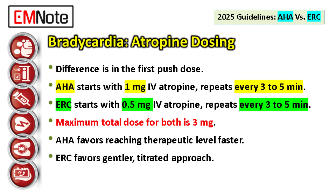The AHA total dose is capped at 3 milligrams. The ERC, though, they start lower — 0.5 milligrams intravenous atropine is their recommendation, same interval, repeat every three to five minutes, and the maximum total dose is also 3 milligrams. So AHA hits harder initially: 1 milligram versus the ERC's 0.5 milligrams, double the dose right out of the gate. The ERC approach leans towards titration, finding the effective dose.